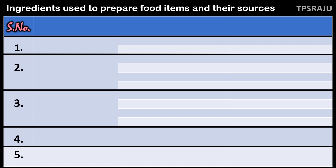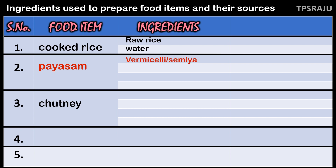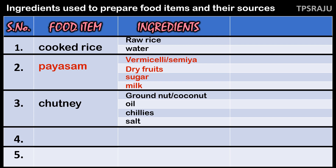Okay students, are you ready to do the homework? Take your science textbook and fill the table. The first column is serial number — one, two, three, four and five. The second column is food item: cooked rice, payasam, chutney, etc. The third column is ingredients — here we write which materials we require to prepare the food item. We use raw rice and water to prepare cooked rice. Ingredients for payasam: vermicelli, dry fruits, sugar and milk. For chutney: groundnut, oil, chillies and salt. Likewise, write another two food items and required ingredients in the table.